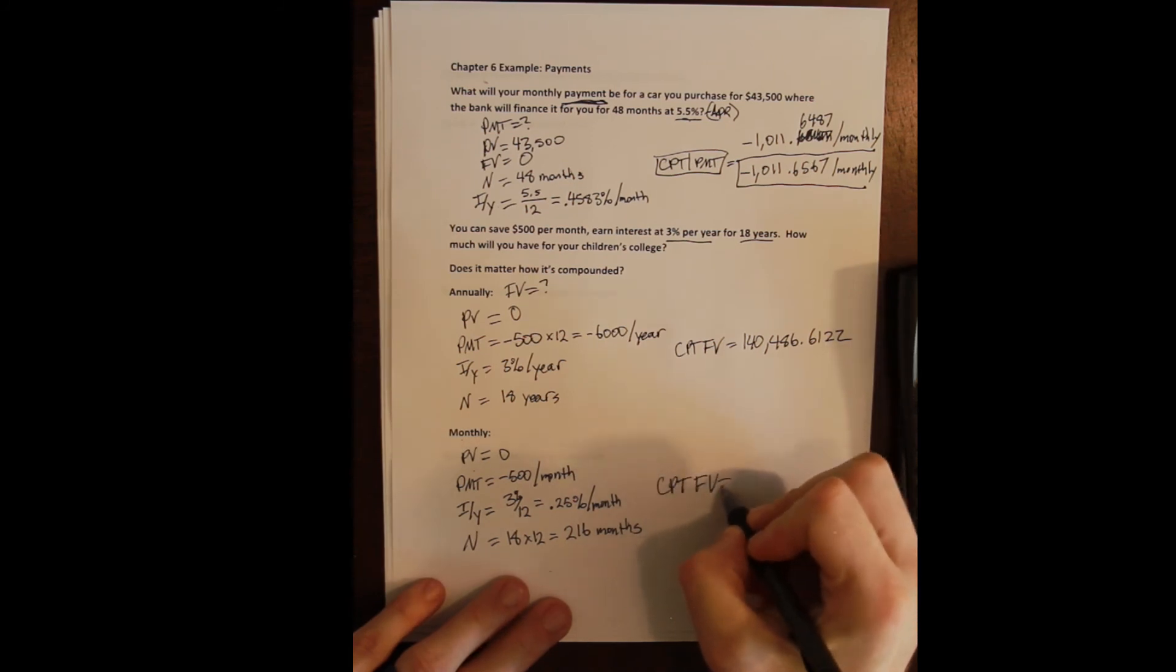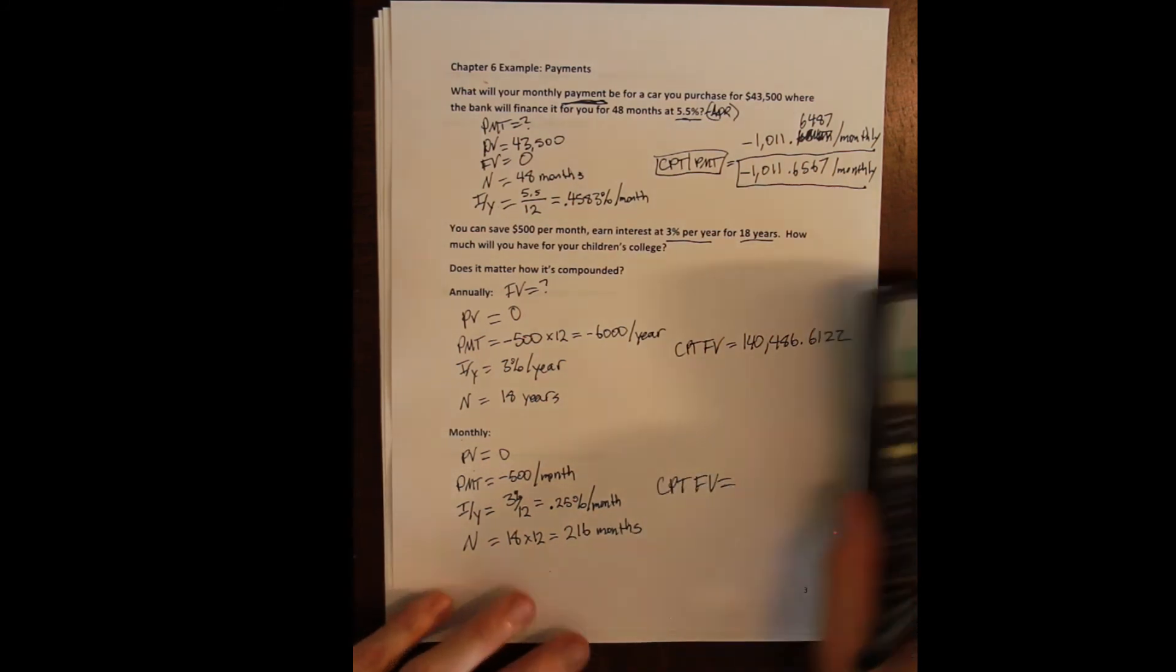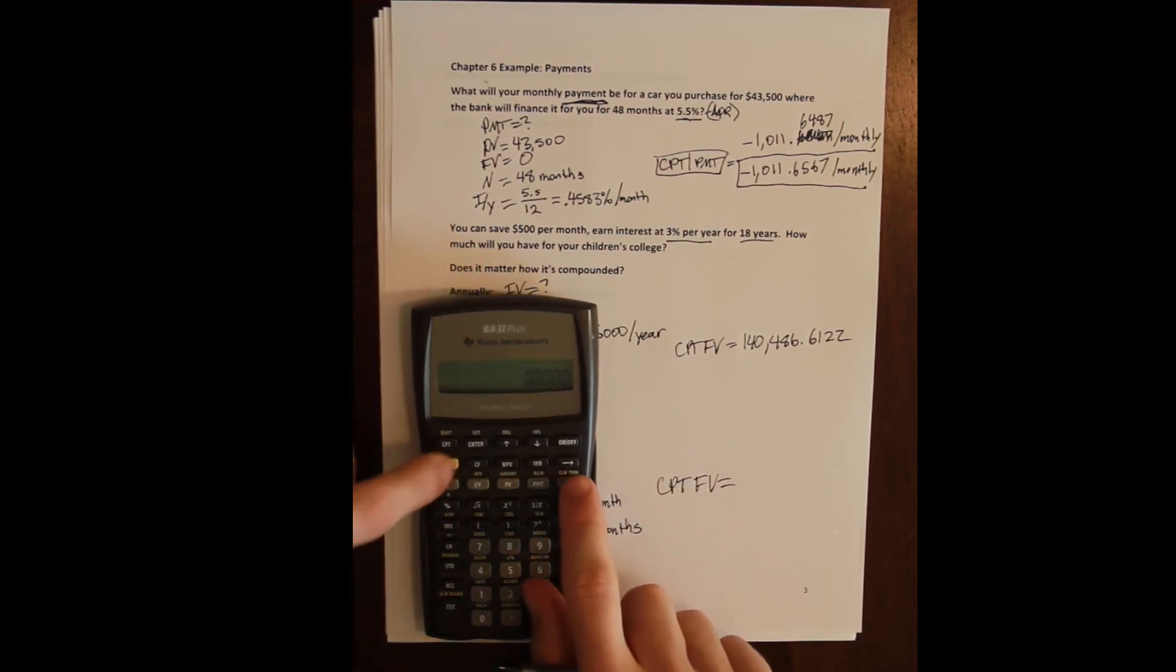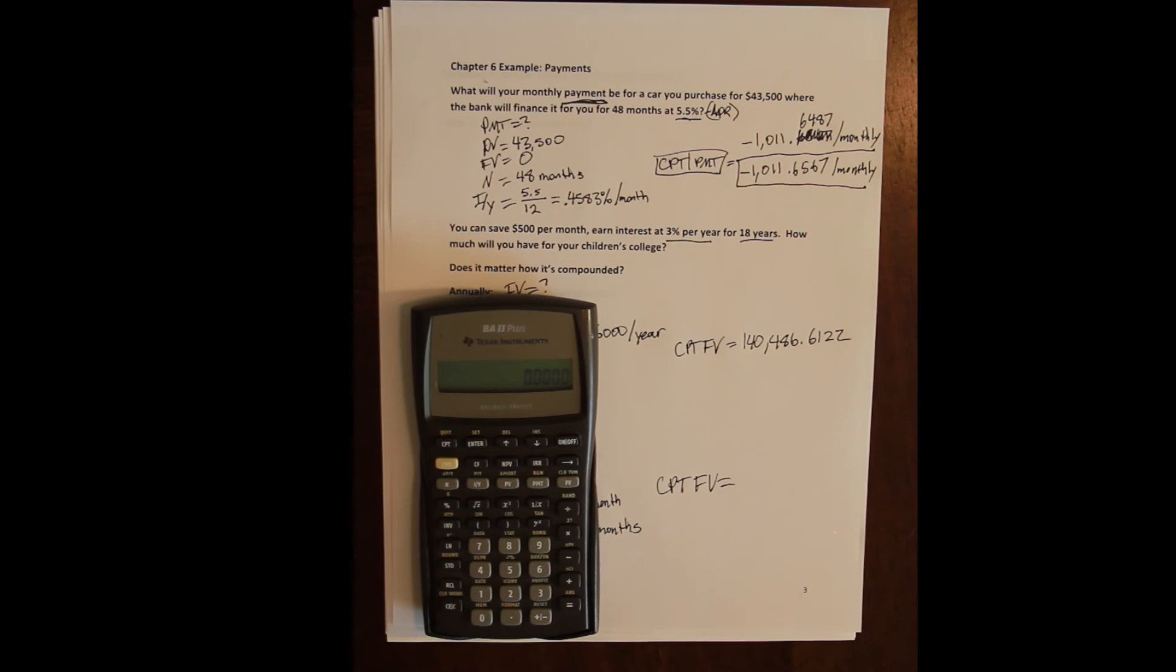So I am always converting everything to the compounding period that I need to solve for. Here I'll compute my future value, and again we can just do it on the calculator really quickly. Second, future value to clear our previous work. We have a payment of five hundred dollars per month, but this is a cash outflow, so it's a negative—that's our payment.